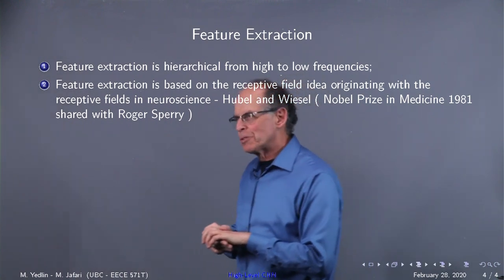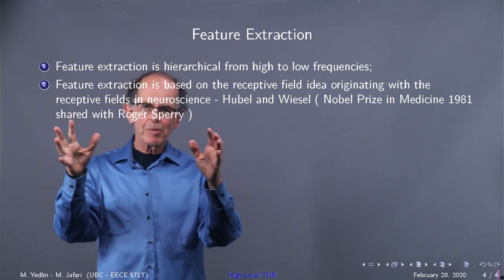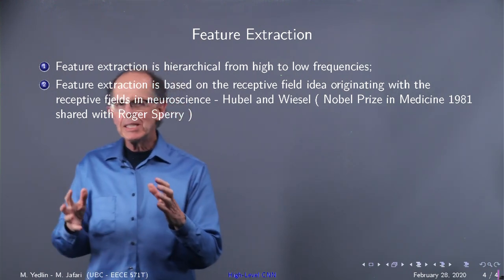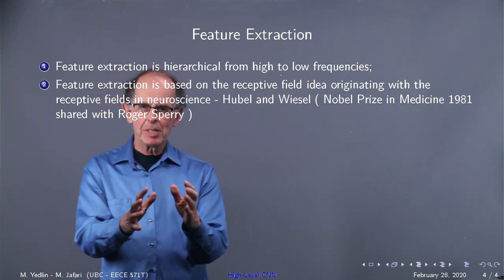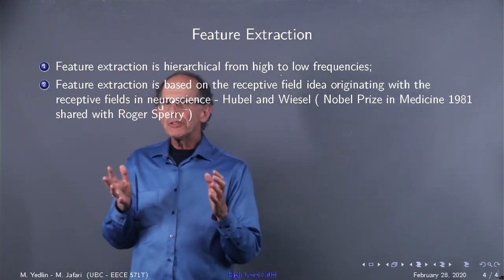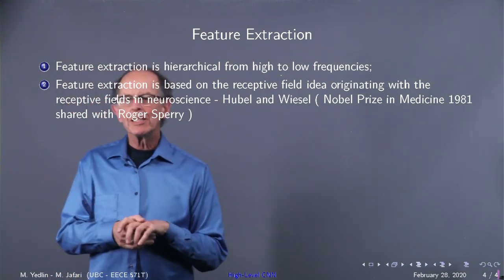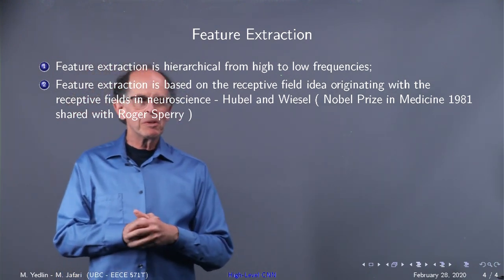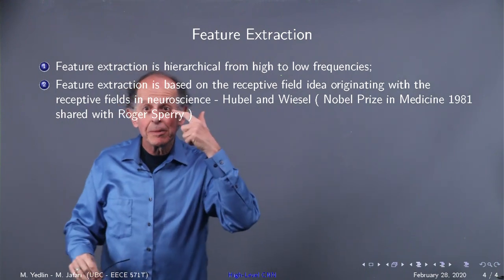What about the feature stuff? The feature extraction is hierarchical — it goes from high frequencies to lower and lower frequencies. We try to maintain the information as we go from high to low frequencies by putting in more features at coarser scales. The feature extraction is based on the receptive field idea originating in neuroscience, in particular the work of Hubel and Wiesel, who got the Nobel Prize in medicine in 1981, shared with Roger Sperry. It's all about the eyes.